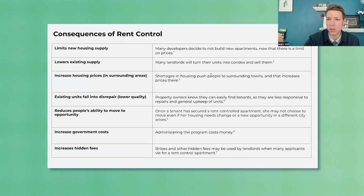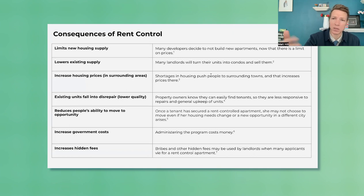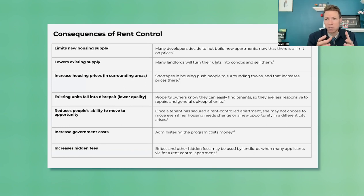One outcome limits new housing supply. Once there's a rent ceiling and I can't charge more for my apartments, I'm not going to build an apartment building because I'm not able to charge the market price. So it limits new supply. But existing supply actually goes down as well, because if I own a property and I'm stuck charging this lower price, I might end up losing money. So I'll turn it into a condo and sell it instead of renting it. It actually takes units off the market — so now we have even fewer apartments to rent.